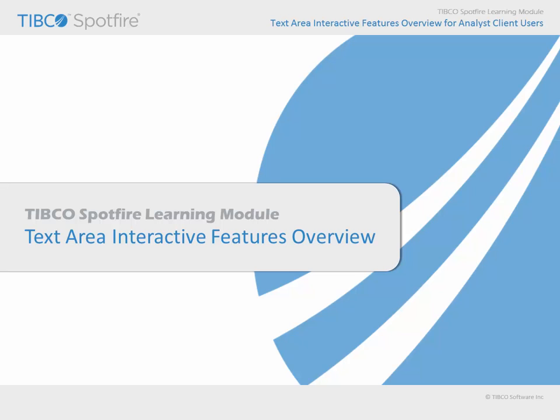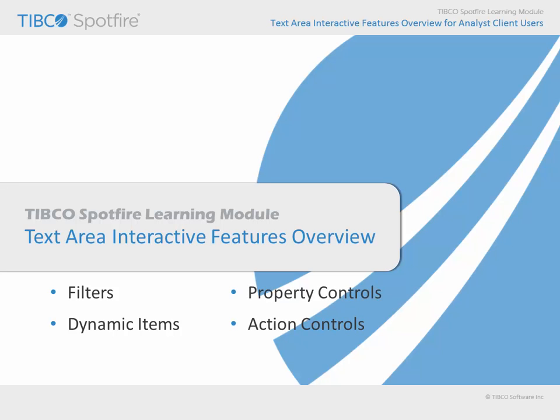Text areas can be configured as an important component of the interactive analysis environment because, in addition to providing an arena for text and images, text areas can also provide interactive elements, which include filters, dynamic items, property controls, action controls, and JavaScript. When combined with instructional text, these elements become powerful tools toward the design of routine analysis workflows.